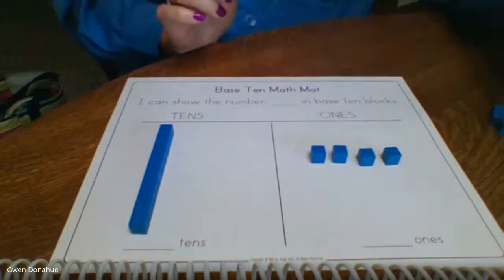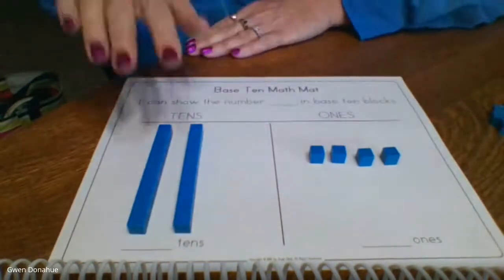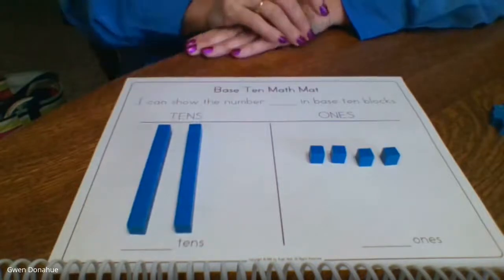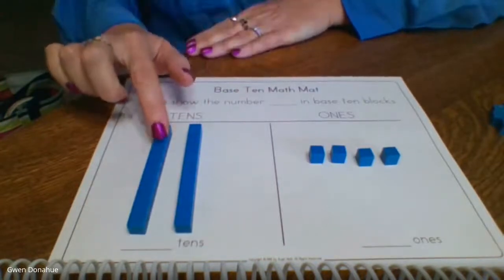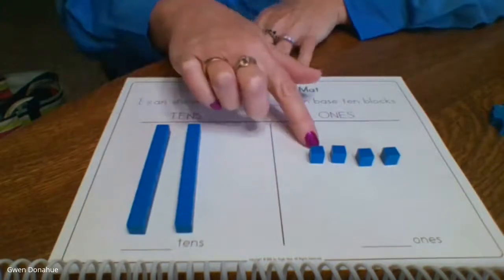Now for those of you that are smart in math, which is all of you, what if I did two tens? So I have 10, 20, 24.